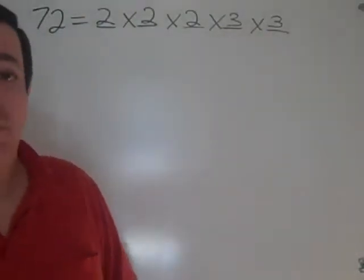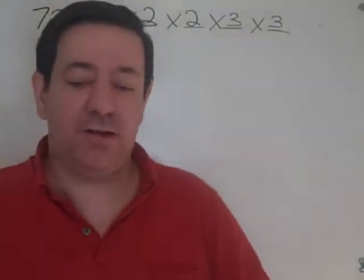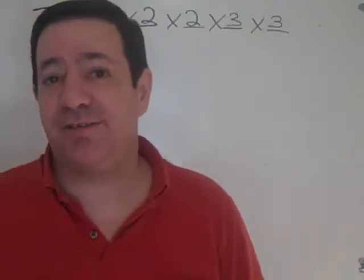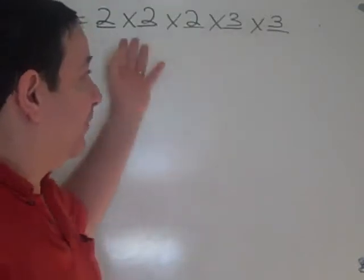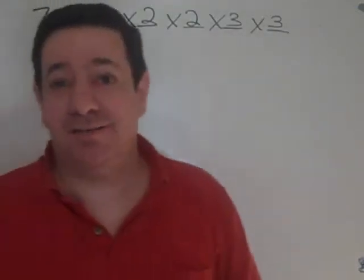That's the answer. That is the prime factorization of 72. And prime factorization is unique. That is, you can't find other prime numbers that also multiply out to 72.